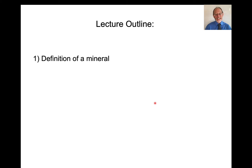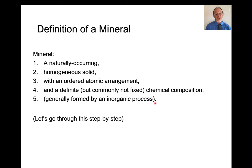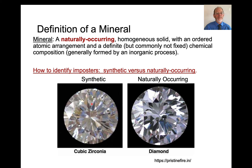There's only one thing in our lecture outline: how to define a mineral. By the end of this lecture, I hope students will be able to identify differences between minerals and non-minerals, and then to distinguish between minerals and non-minerals when given examples. There are five components to the definition of a mineral: it has to be naturally occurring, a homogeneous solid, with an ordered atomic arrangement, and a definite — but not necessarily fixed — chemical composition. It also has to be generally formed by an inorganic process. Let's go through this step-by-step.